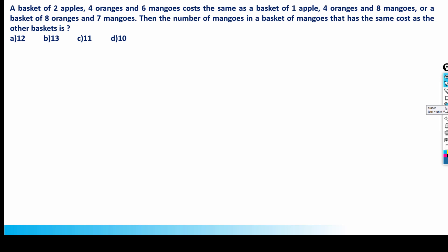Let's look at this next question from CAT 2021, Slot 1. The question says a basket of two apples, four oranges and six mangoes costs the same as a basket of one apple, four oranges and eight mangoes. Let's assume the cost of one apple is 'a', cost of one orange is 'r', and cost of one mango is 'm'.